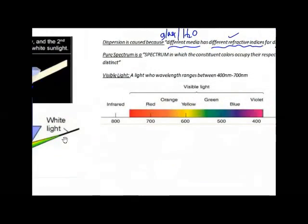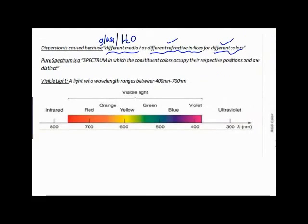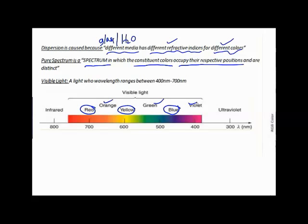Because of the overlapping of colors, the spectrum is impure — the colors are not distinct. A pure spectrum is one in which the constituent colors occupy their respective positions and are distinct. You can clearly see red, orange, yellow, green, blue, and violet all distinctly separated. Such a spectrum is called a pure spectrum.